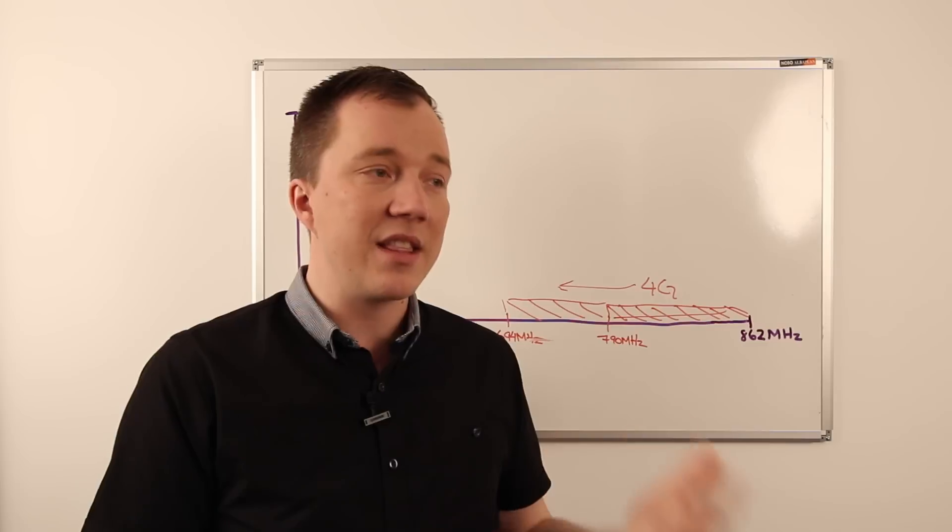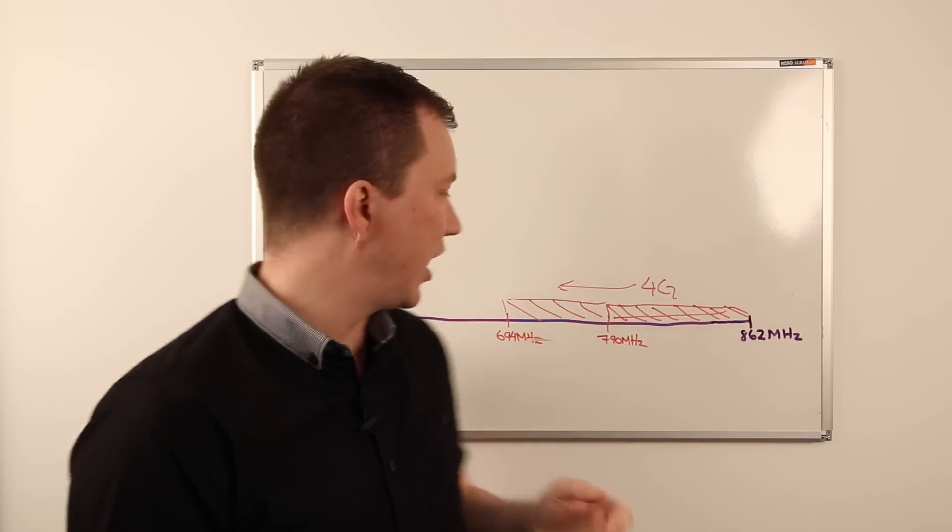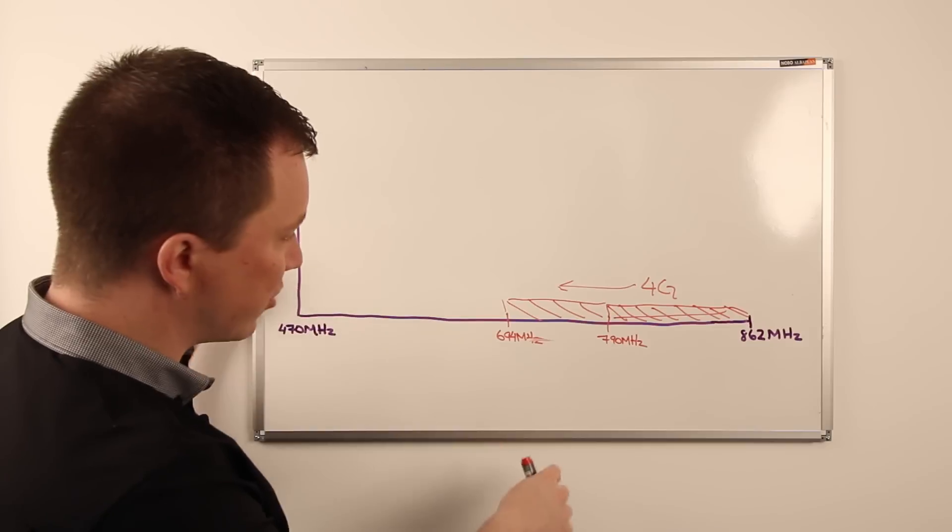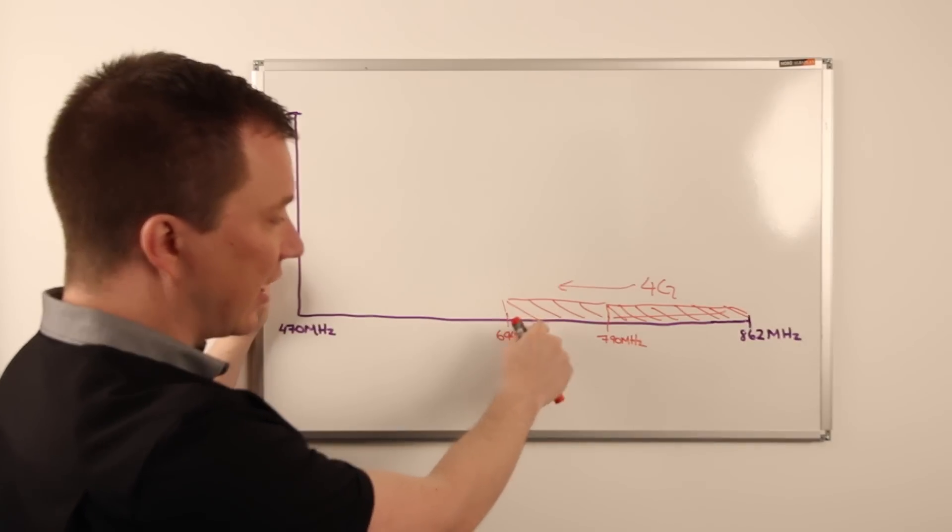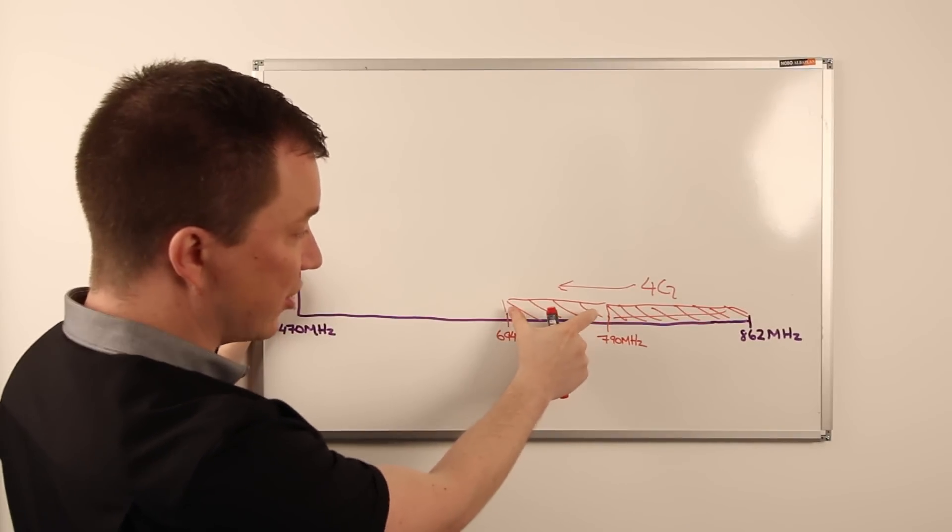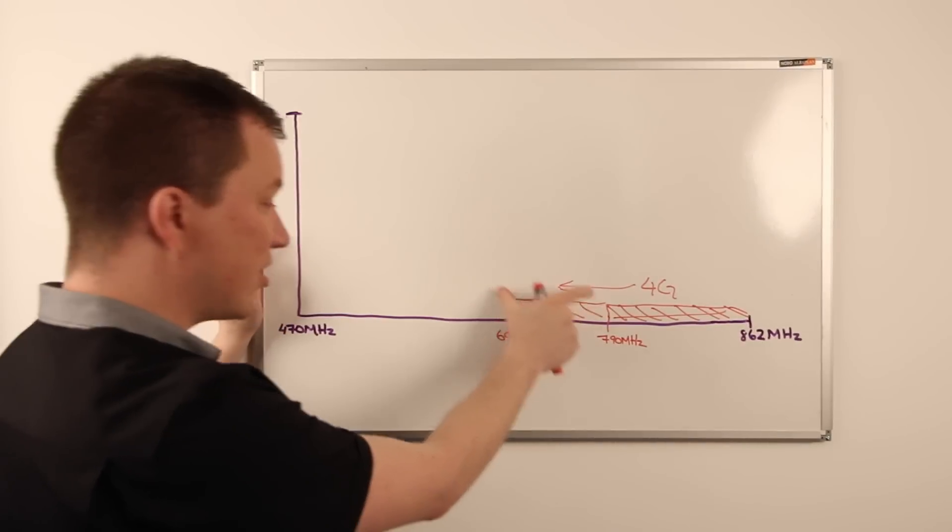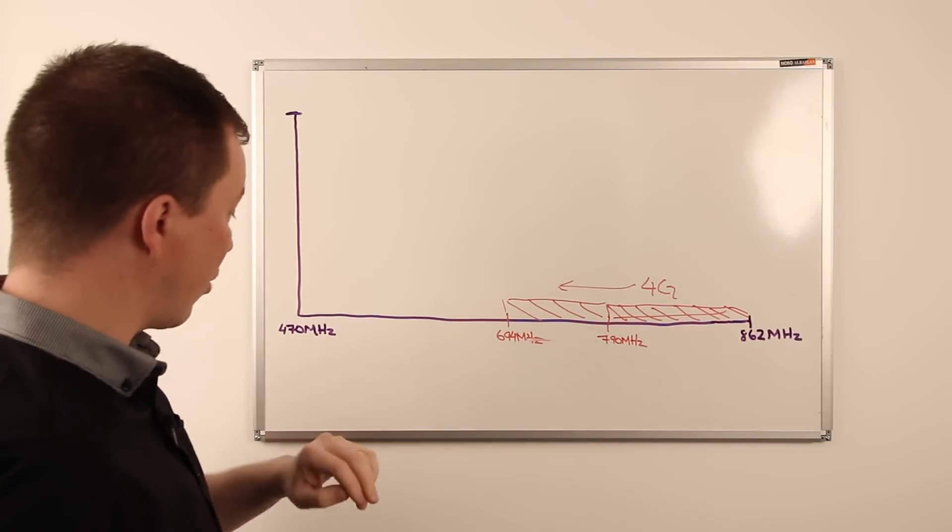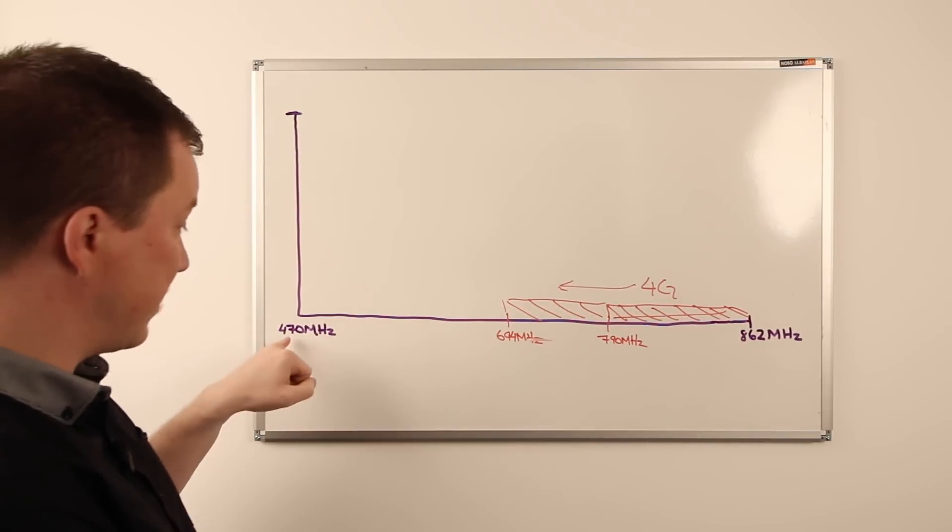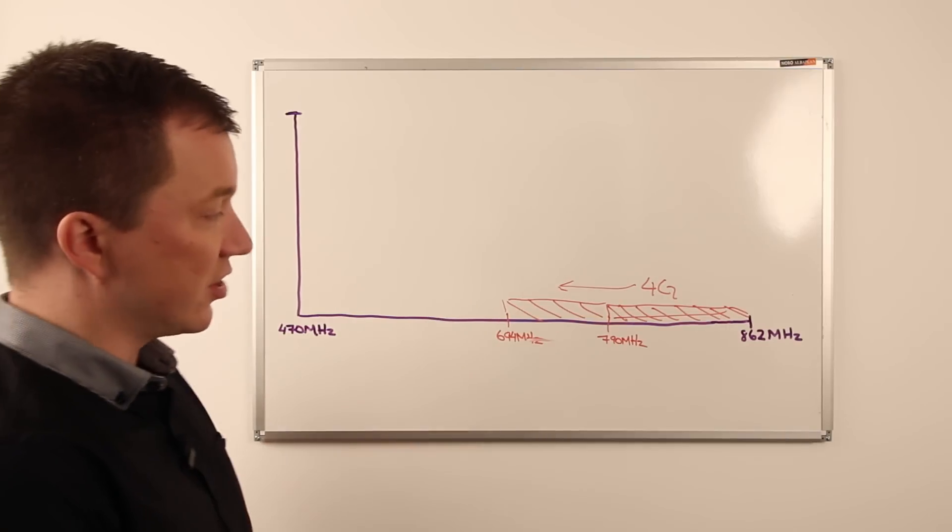Now the date for this is still somewhat unclear because what needs to happen in this process is any existing television or digital television that exists in this block needs to be repurposed into these lower remaining UHF bands, or specifically 470 to 694.